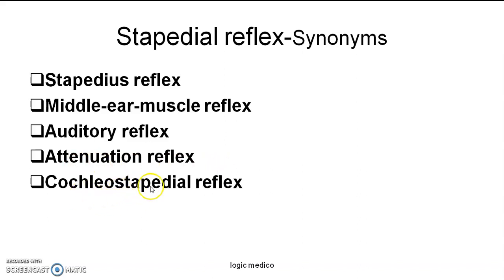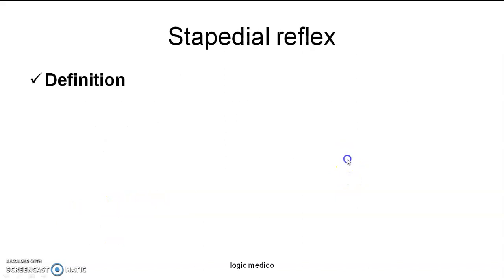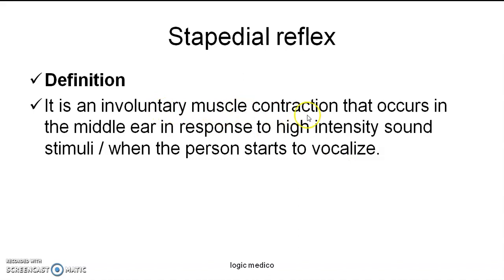The stapedial reflex is involved at the junction between the stapes and cochlea, where the stapedius is attached, so it is also called cochleostapedial reflex. It minimizes transmission reaching the cochlea, and since it is inside the ear, it is also called intra-aural reflex. By definition, stapedial reflex means involuntary muscle contraction that occurs in the middle ear in response to any high intensity sound stimuli or whenever the person starts speaking.